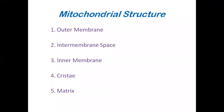The mitochondrial structure is divided into five parts: the first one is the outer membrane, the second one is the intermembrane space, the third one is the inner membrane, the fourth one is the cristae, and the fifth one is the matrix. We will turn towards each one by one.